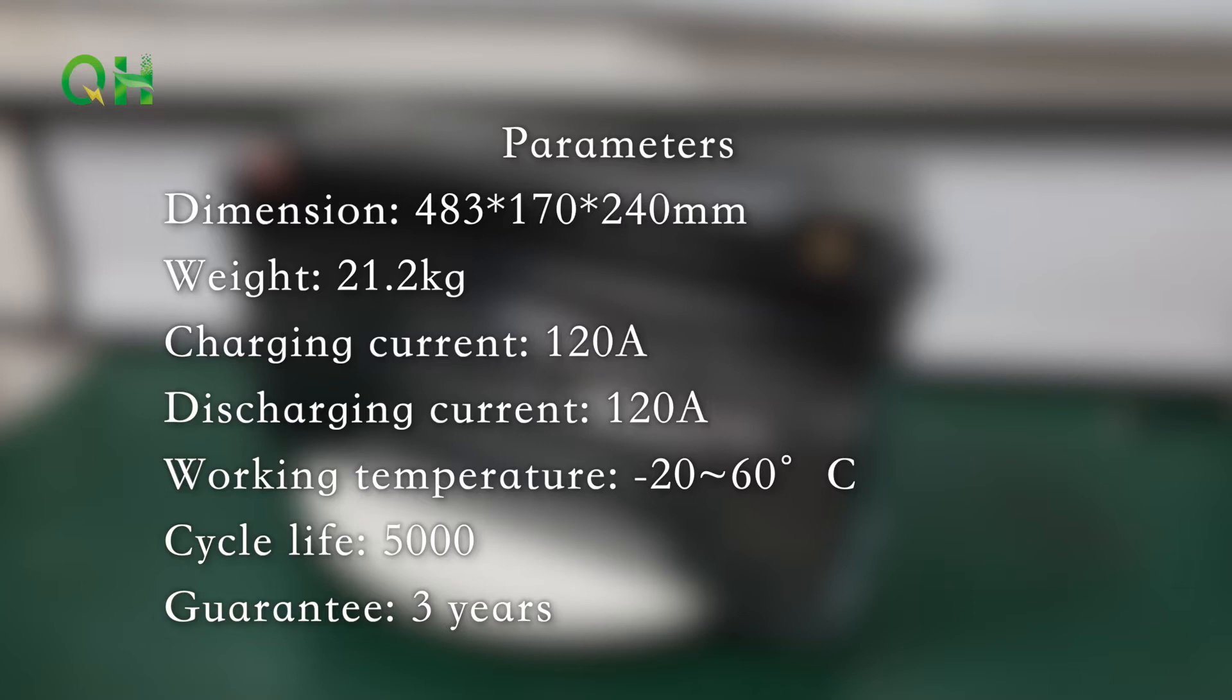Parameters: Dimension 483, 170, 240mm. Weight 21.2kg. Charging current 120A. Discharging current 120A. Working temperature -20°C to 60°C. Cycle life 5000. Guarantee 3 years.